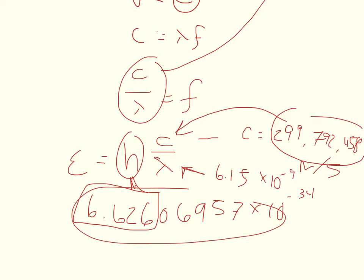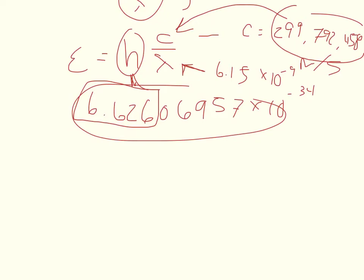Now to do the dimensional analysis really quick, Planck's constant has units of joules times seconds. The speed of light has units of meters per second, and the wavelength has units of meters. So at this point, the seconds are going to cancel out and the meters are going to cancel out, and we're going to be left with units of joules, which is energy, that's what we're asked to find. So dimensionally, everything works out.